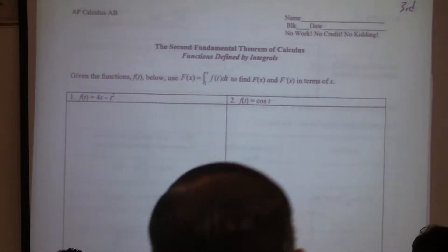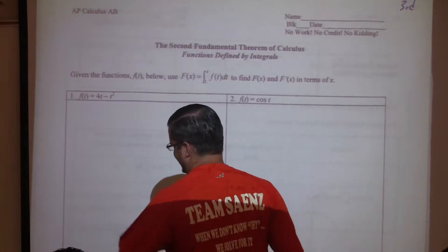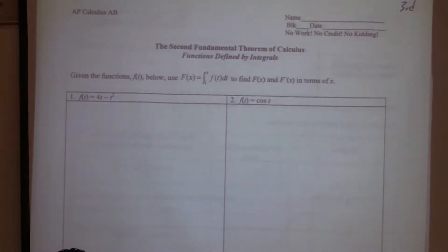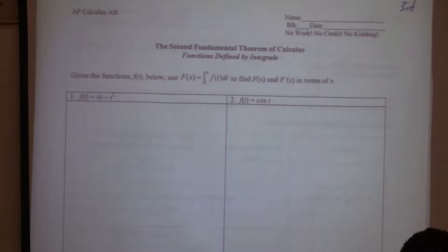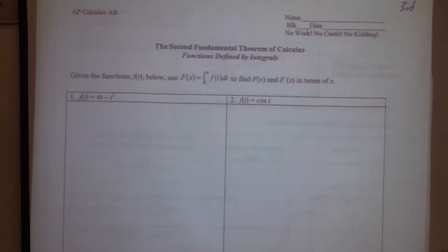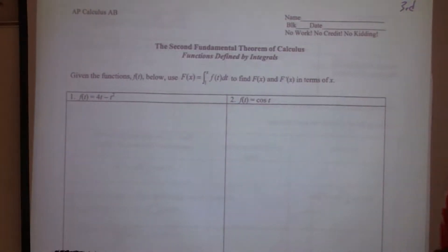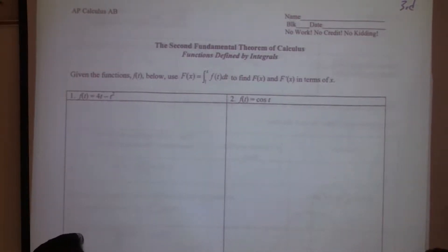The original Fundamental Theorem of Calculus says that if I integrate a function, it equals capital F — the antiderivative of little f — evaluated at B minus the antiderivative evaluated at B. For the Second Fundamental Theorem of Calculus, or the extension to this, what we're going to be looking at is the derivatives of integrals.